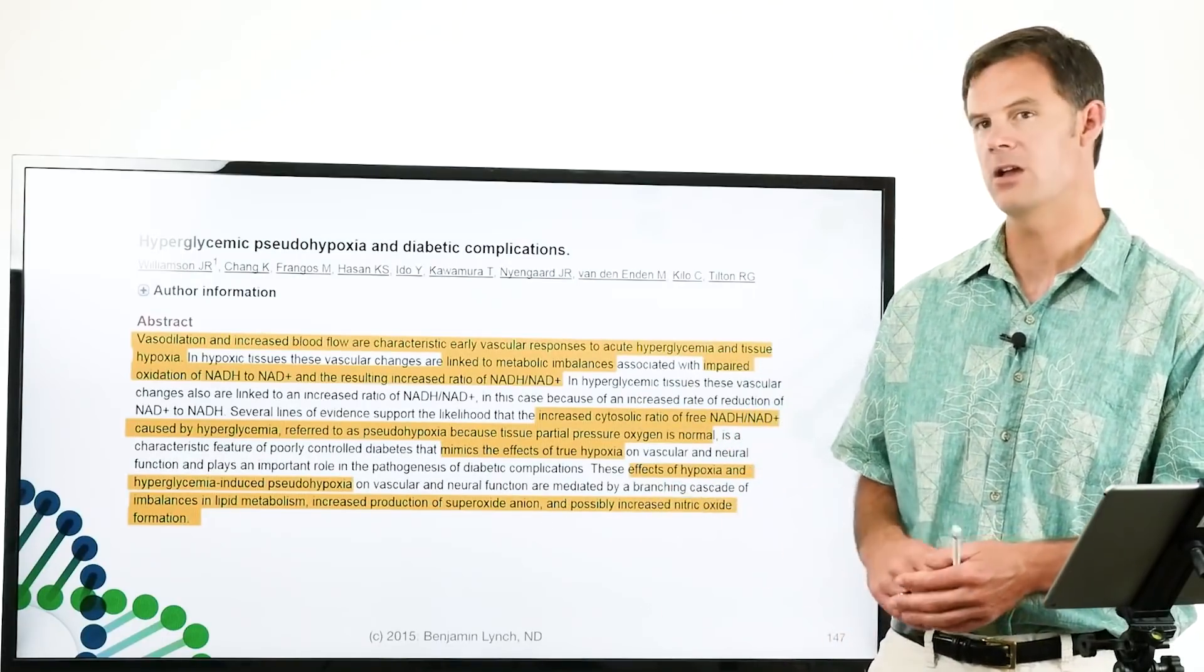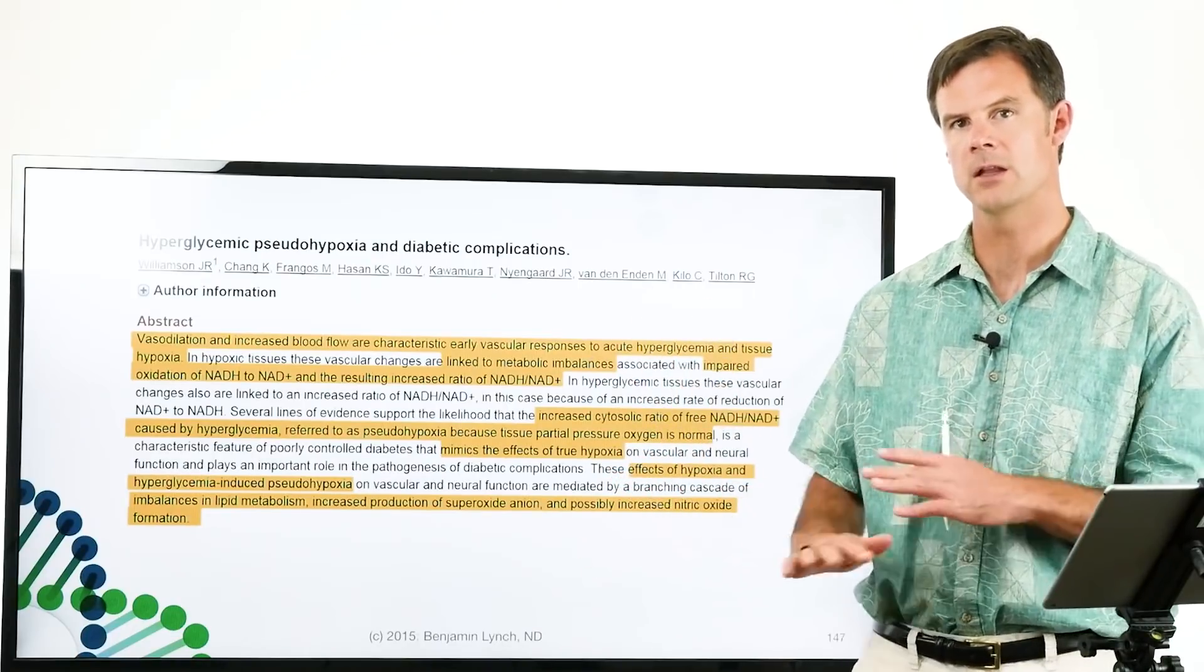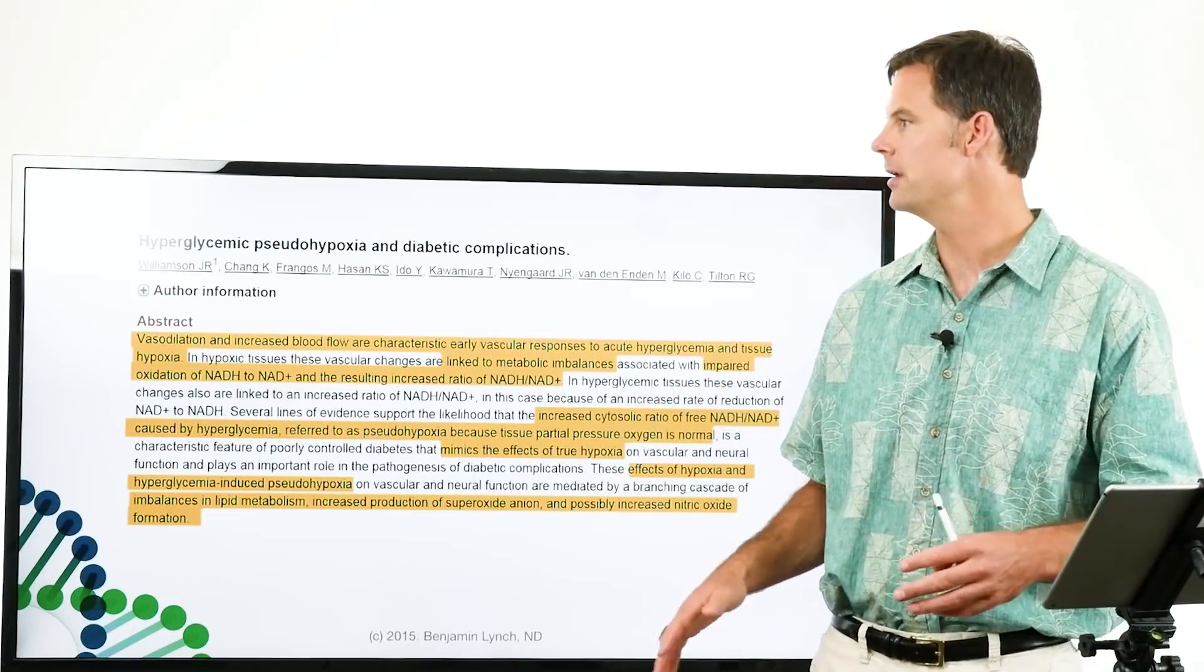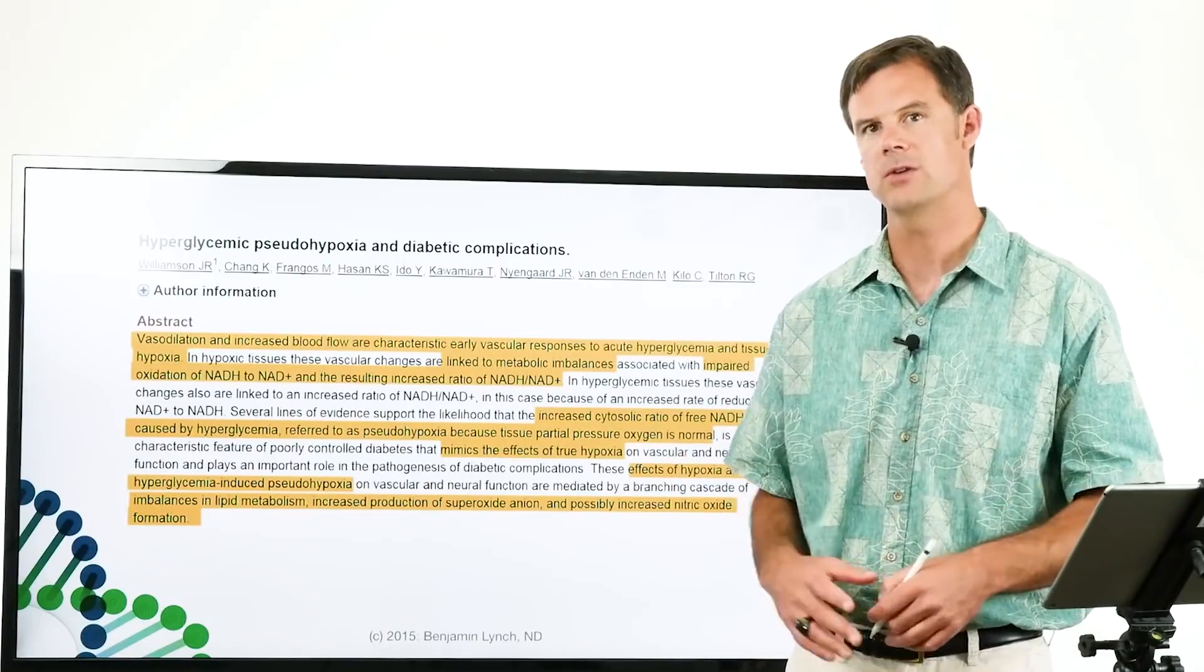High fructose corn syrup is everywhere and that's leading to a huge problem. So if you're a diabetic, cut fructose. Step one, done. Eliminate juice and refined sugars and you'll see a huge change.